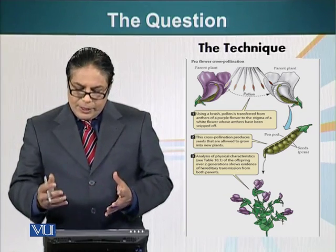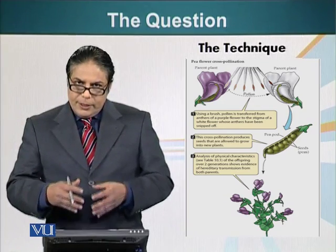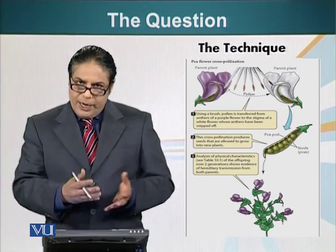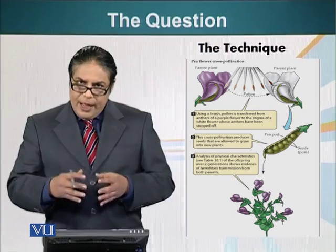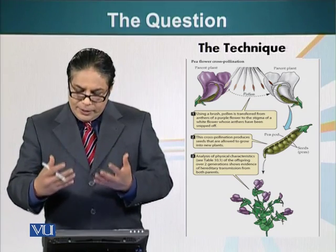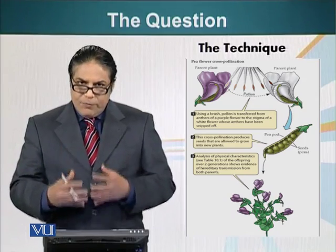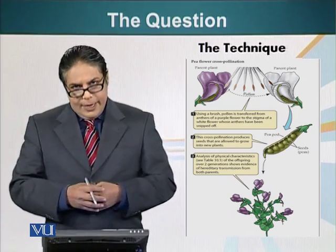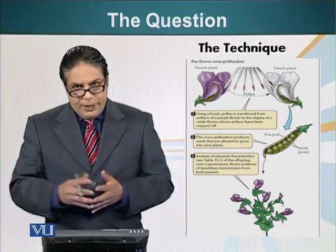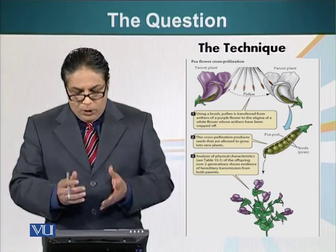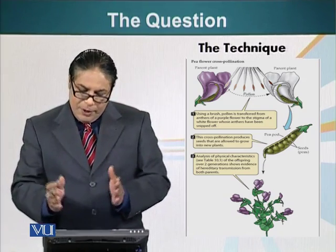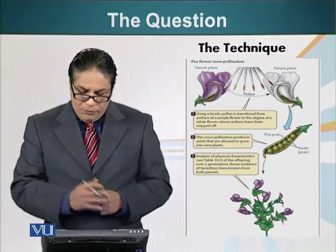As a result, the pollens fertilized the egg and resulted in seeds, which he could grow and look at in the next generation of the cross-breeding experiment between two types of flowers.